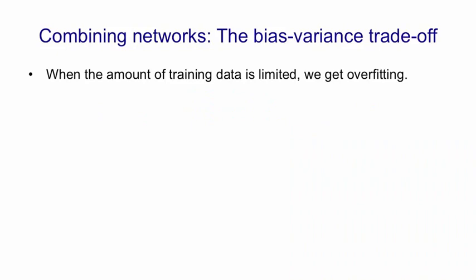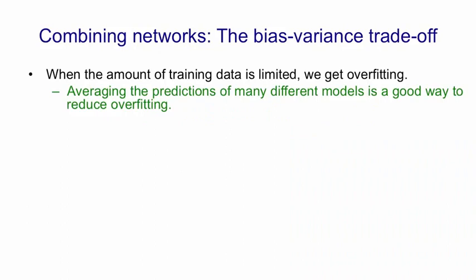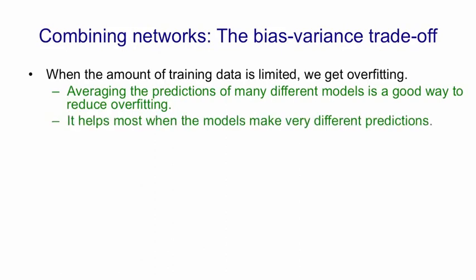As we've seen before, when we have a limited amount of training data, we tend to get overfitting. If we average the predictions of many different models, we can typically reduce that overfitting. This helps most when the models make very different predictions from one another.